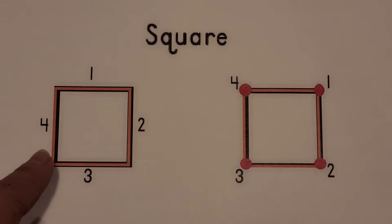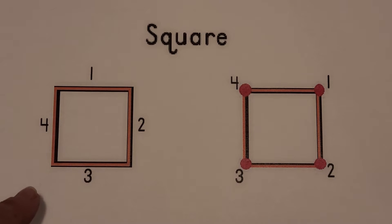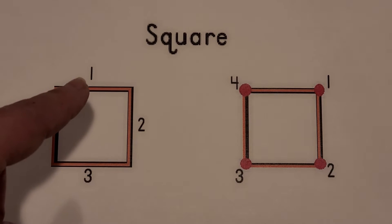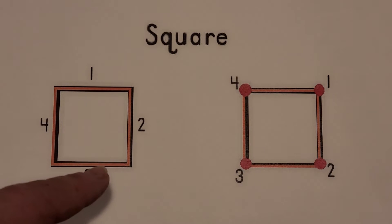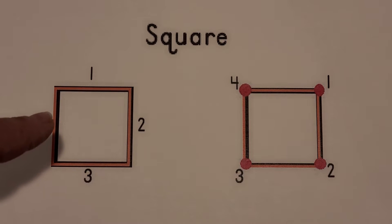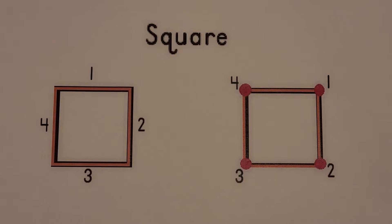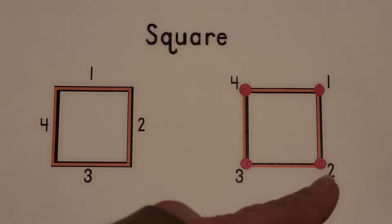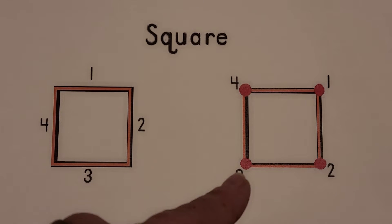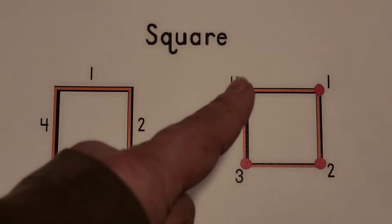This is a square. A square has four sides. One, two, three, four. And a square has four corners. One, two, three, four.